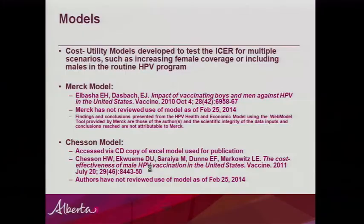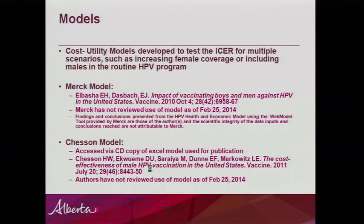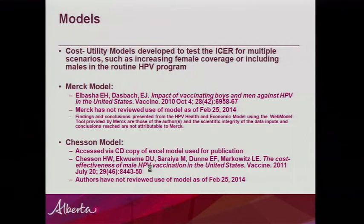The two models we used are both cost utility models, both developed to test the ICER for multiple scenarios — comparing a baseline to a new intervention such as increasing female coverage or including males in the HPV program. The first model is from Merck Pharmaceutical, the developer of Gardasil — we only looked at the quadrivalent vaccine. While it's from Merck, it went through peer review and was endorsed by other bodies and seen not to be biased, though it's important to consider it came from a pharmaceutical company. The Chasson model is from the CDC in the US, created to test the validity of the Merck model, so they're nicely used as a pair.